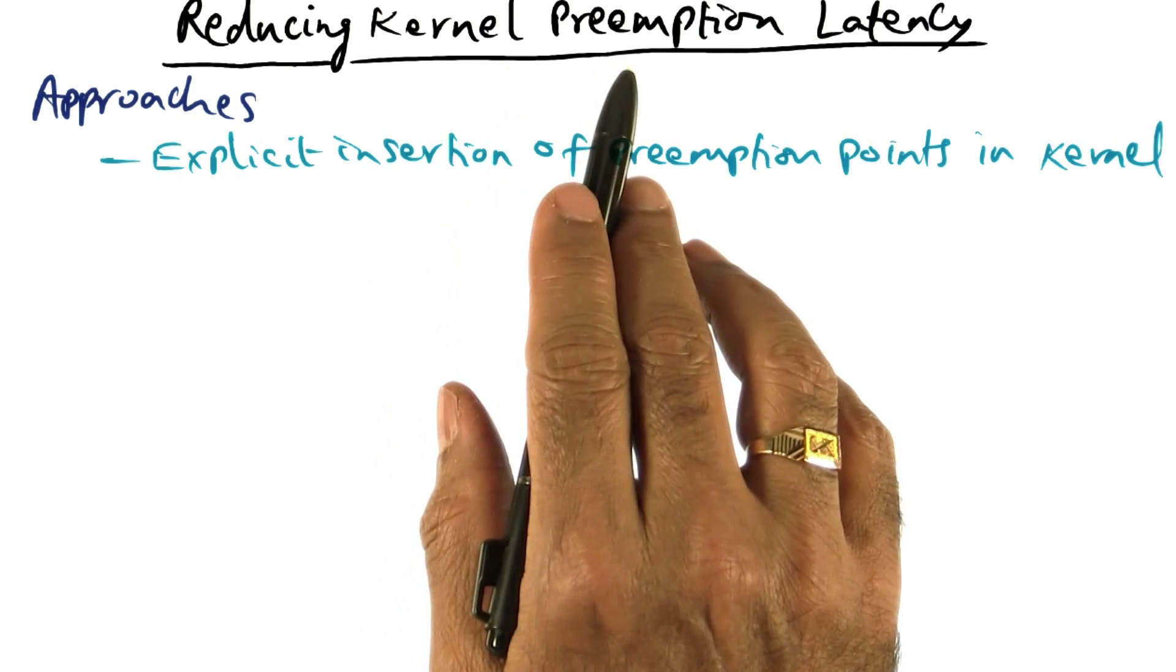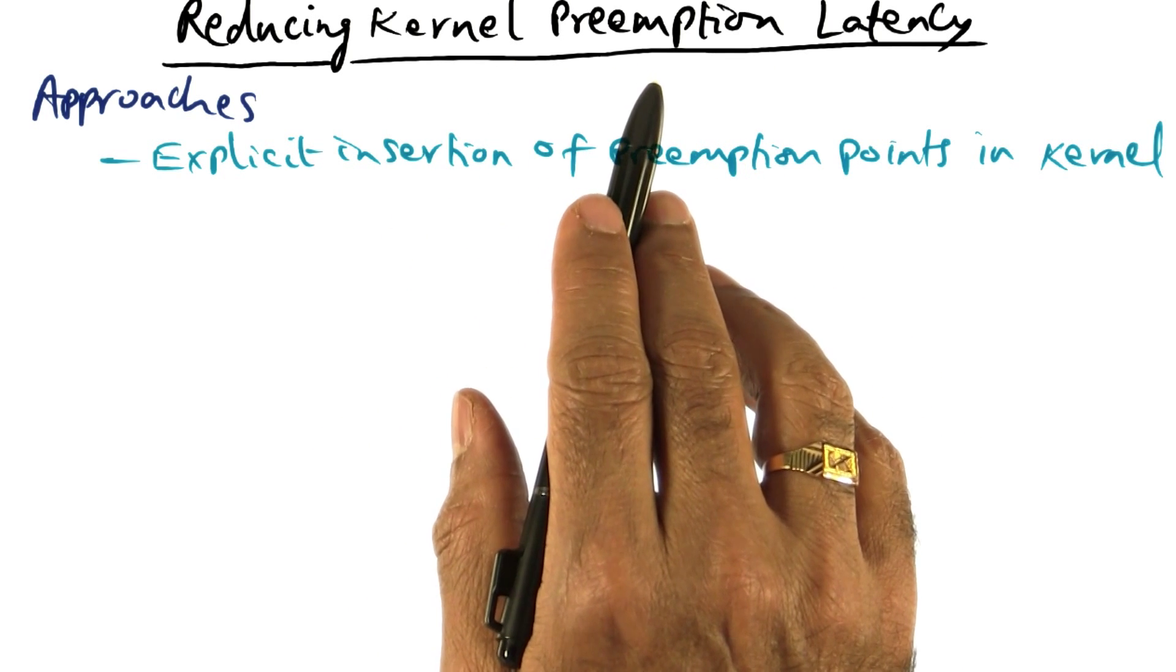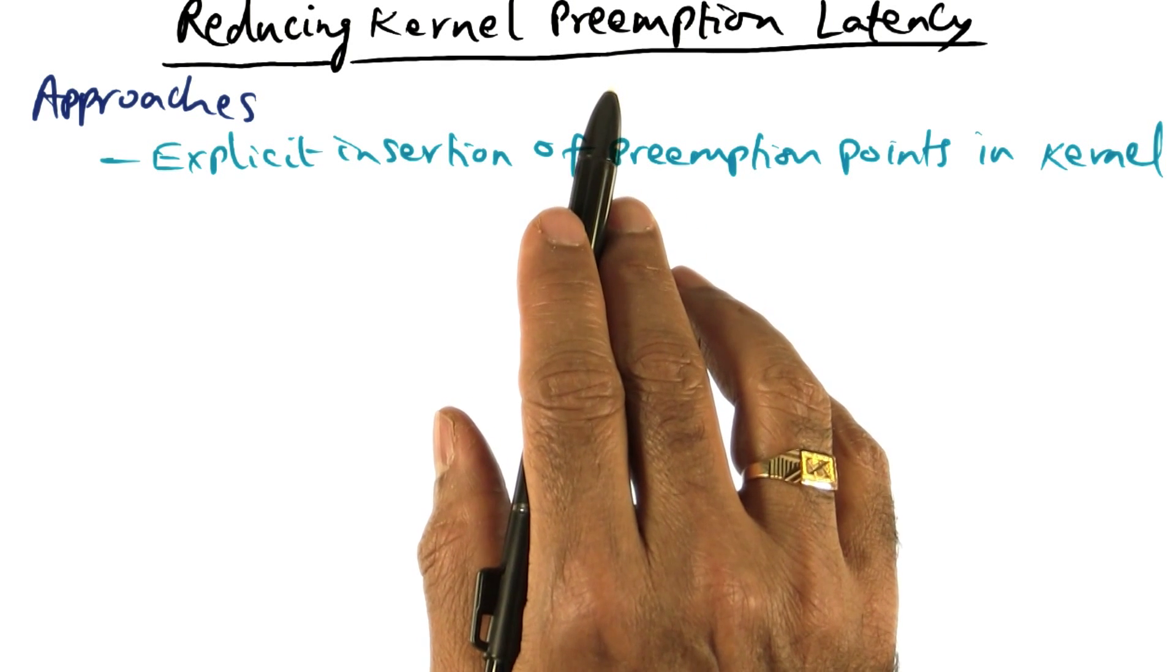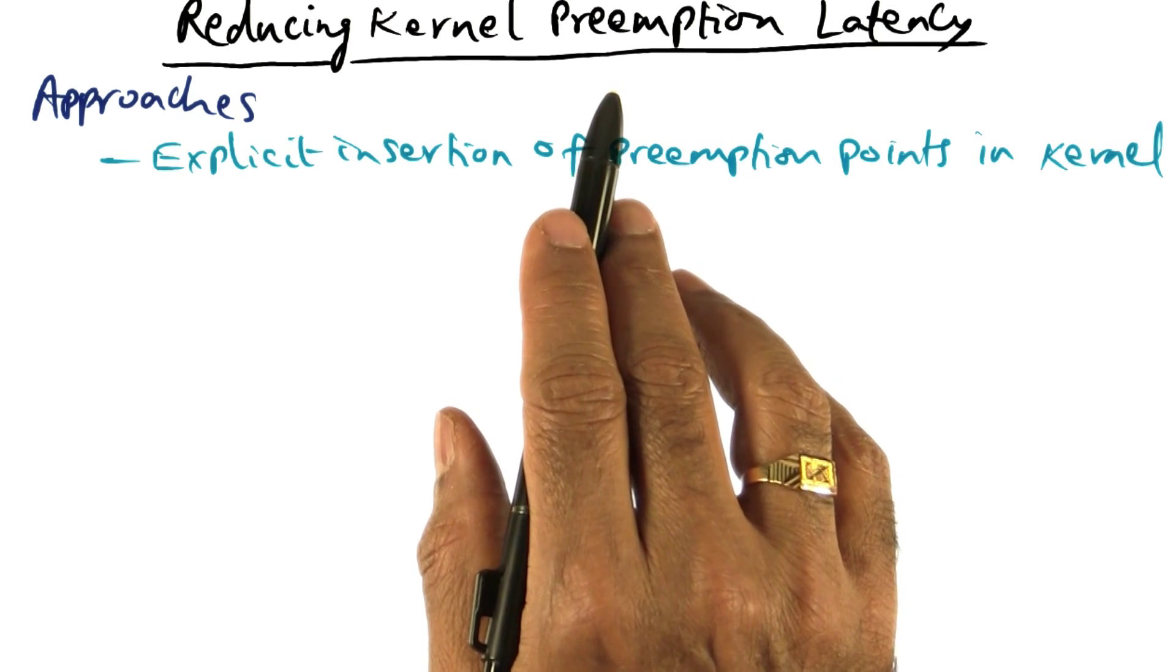Now, how do we reduce the kernel preemption latency? Timer goes off, but the kernel is in the middle of something, and so we have to wait for the kernel to be ready to take that interrupt.